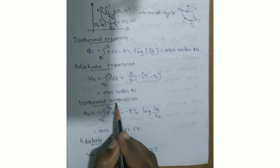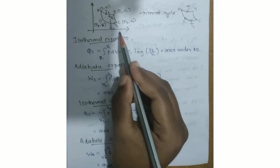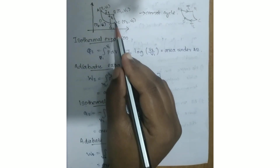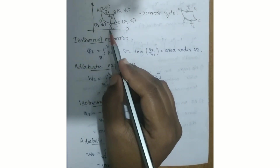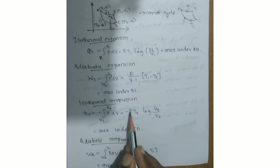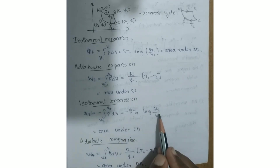Isothermal compression CD is given by: minus integral of V3 to V4 of P dV, which equals minus RT2 log(V4/V3).